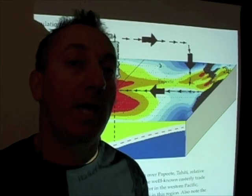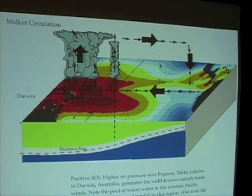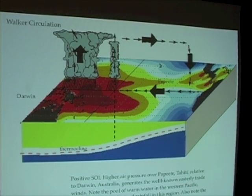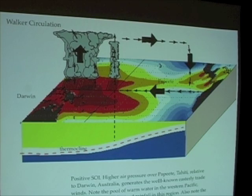Here's the part to really pay close attention to. Normally, this would be La Niña conditions. Air pressure is higher in Papeete/Tahiti than Darwin, Australia. Because we have higher pressure here and lower pressure here, winds are going to flow from Papeete/Tahiti to Darwin, Australia. These are the normal trade winds that we just talked about in the global atmospheric circulation — winds generally flowing from east to west across the equatorial Pacific.